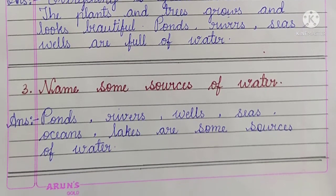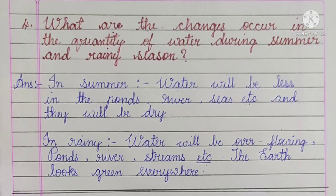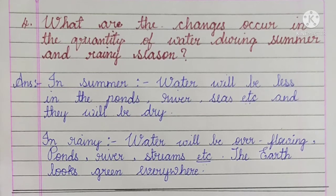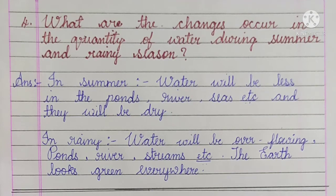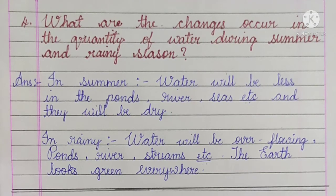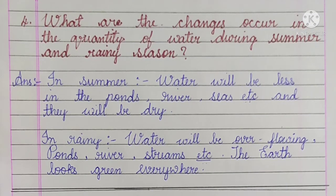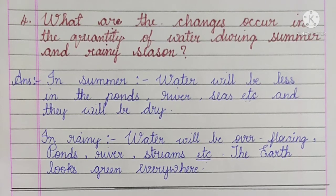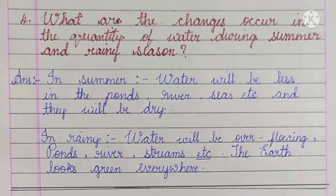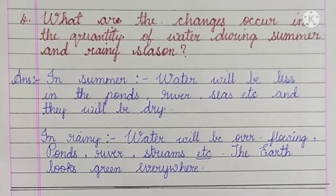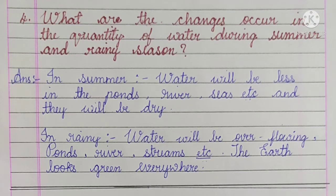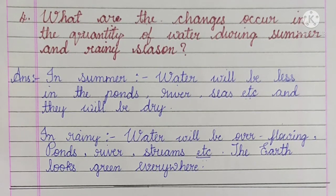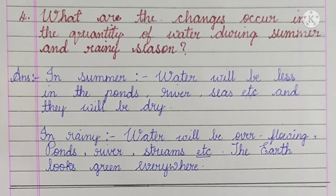Number 4, what are the changes that occur in the quantity of water during summer and rainy season? Answer: in summer, water will be less in the ponds, rivers, seas etc. and they will be dry. In rainy season, water will be overflowing in ponds, rivers, streams etc. The earth looks green everywhere.